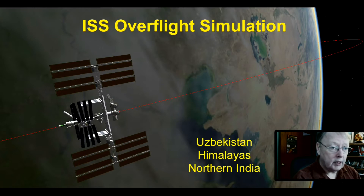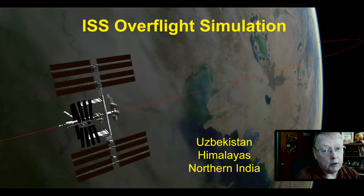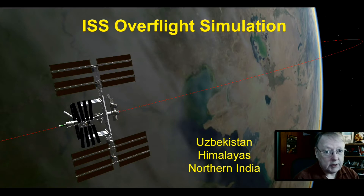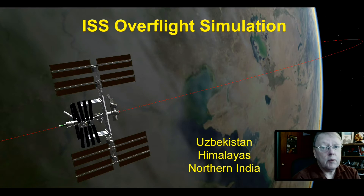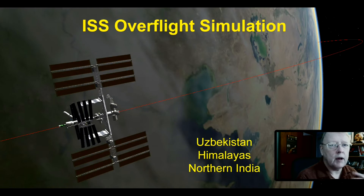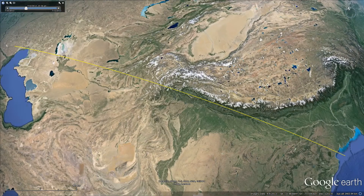So this video is trying to be real about the problem of what can you see from space, what does it look like, what can you identify, what can you learn from it. I've made a simulation with a combination of tools including Google Earth, and we're going to pretend that we're aboard the International Space Station, flying over South Central Asia, to identify geological landforms at the scale of an astronaut looking down from the space station.